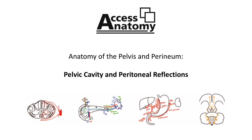So in the male, the peritoneum is draped over the pelvic organs and creates the vesicorectal pouch in between the bladder and the rectum. Whilst in the female, the peritoneum creates the vesicouterine pouch between the bladder and the uterus, and the uterorectal pouch between the uterus and the rectum.